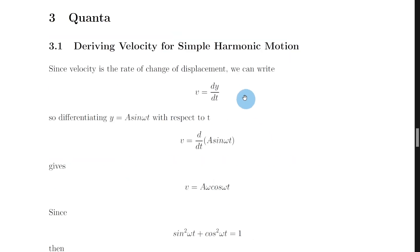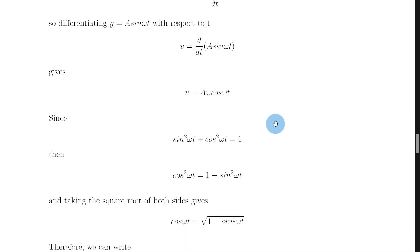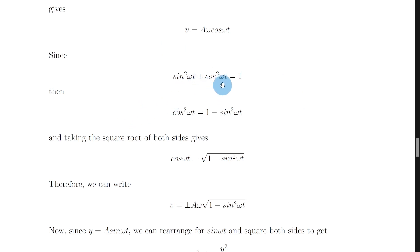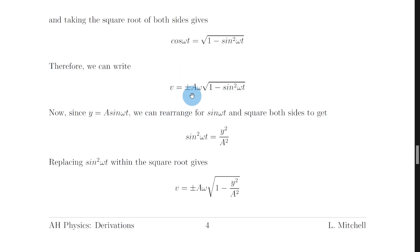Just to quickly recap: we start with the expression for velocity v equals dy by dt, and our expression for displacement y equals a sine omega t. We differentiate that with respect to time to get v equals a omega cos omega t. Then we use the trig identity sine squared omega t plus cos squared omega t equals 1, rearrange to get cos squared omega t, take the square root of both sides to give cos omega t equals the square root of 1 minus sine squared omega t, and rewrite v as plus or minus a omega times the square root of 1 minus sine squared omega t.